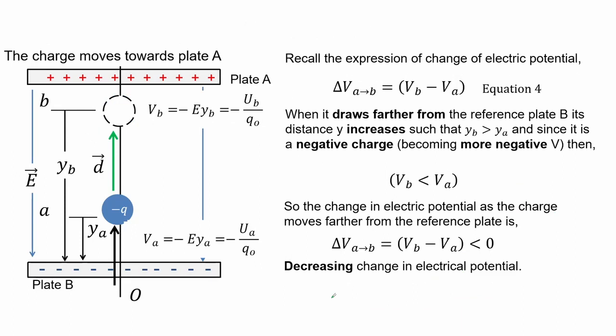For this case the negative test charge moves toward the positive plate A. Recall the expression for the change in electric potential, equation 4. When it draws farther from reference plate B, its distance Y increases such that Y_B is greater than Y, and since it is a negative charge it becomes more negative as it goes farther. This results in electric potential at B less than electric potential at A — a decreasing change in electrical potential.